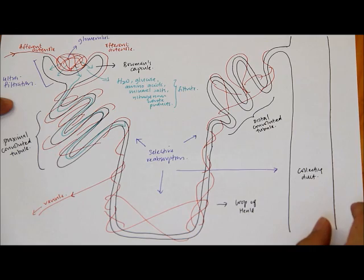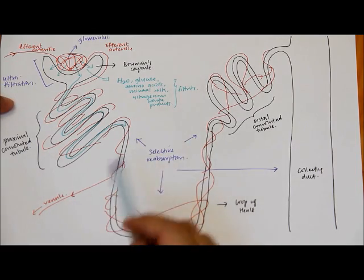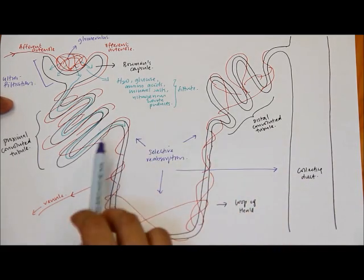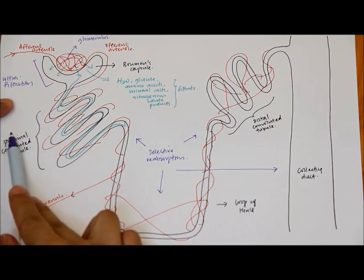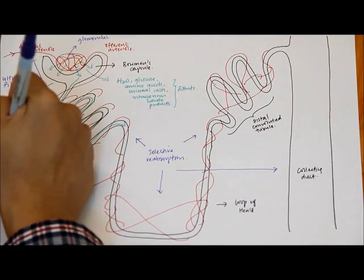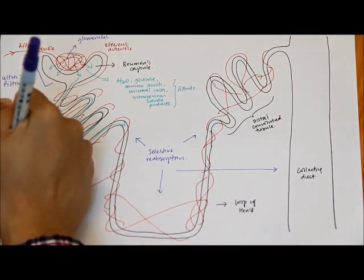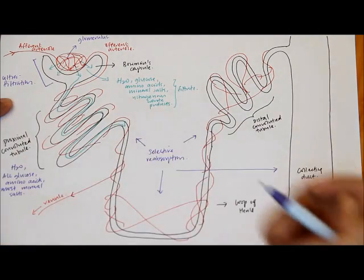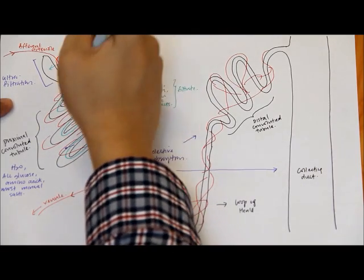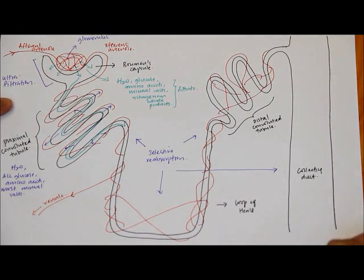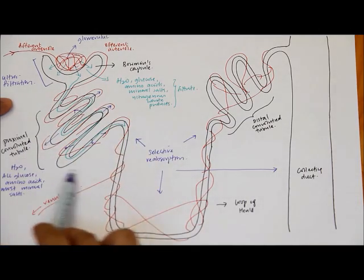Selective reabsorption is the reabsorption of substances that are useful to the body back into the bloodstream. At the proximal convoluted tubule, water, all the glucose, amino acids, and most of the mineral salts are reabsorbed back into the bloodstream. This is where most of the useful substances are reabsorbed.